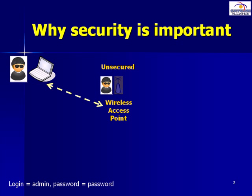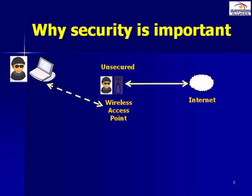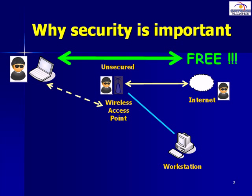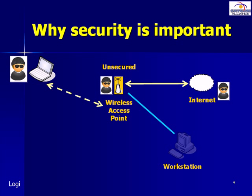Once they have the login and password to this access point, they effectively control it. This control means they are able to set and make any changes to the hardware of the access point. Their next step is to gain control of the internet, allowing them free and unrestricted use of someone else's internet — meaning they are able to download as much material as they want. Because the access point has been poorly secured, there's a good chance that any workstation connected to it has also been poorly secured, with poor logins and passwords or security vulnerabilities that can be exploited using their tools.